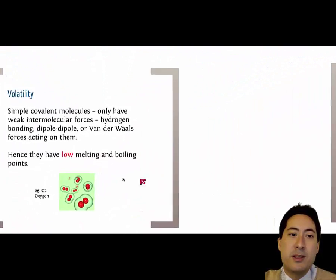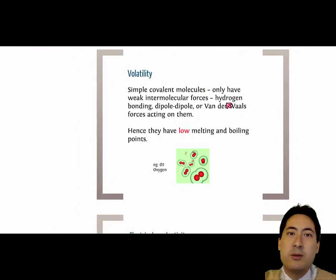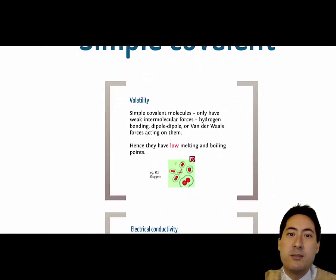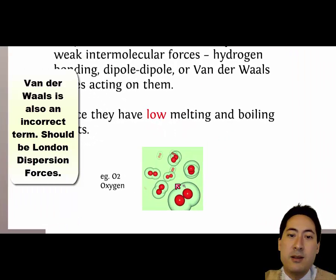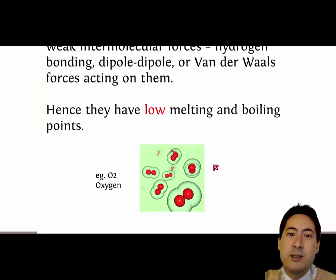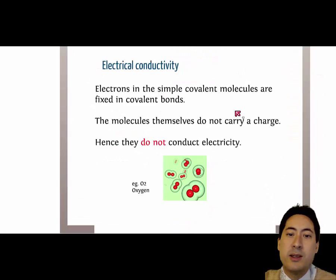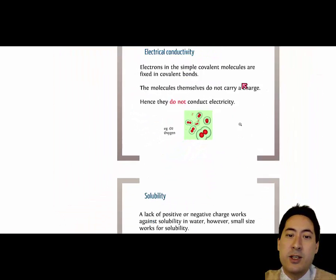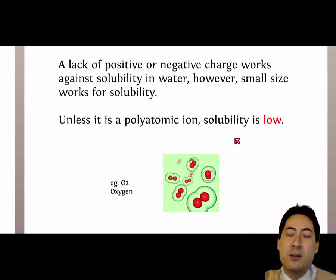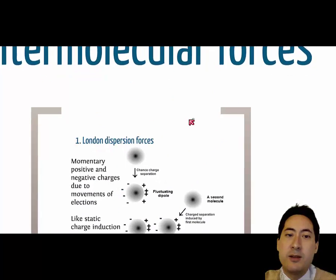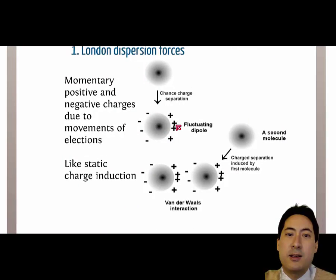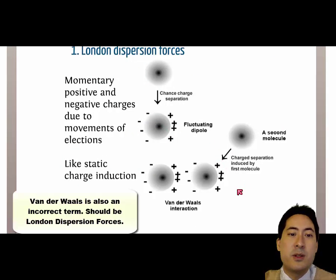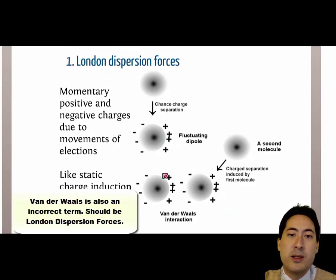Now, if the molecule itself is quite small, we call it a simple covalent molecule. And when that is the case, the intermolecular forces are very, very weak. So it has a very low melting boiling point. Because they don't carry a charge, they can't conduct electricity. Their solubility is low because they're usually non-polar. So they don't have a positive or negative charge. So the only charges available are these random static electric charges we call London dispersion forces. So the more electrons they have, the better they will have these van der Waals London dispersion forces.